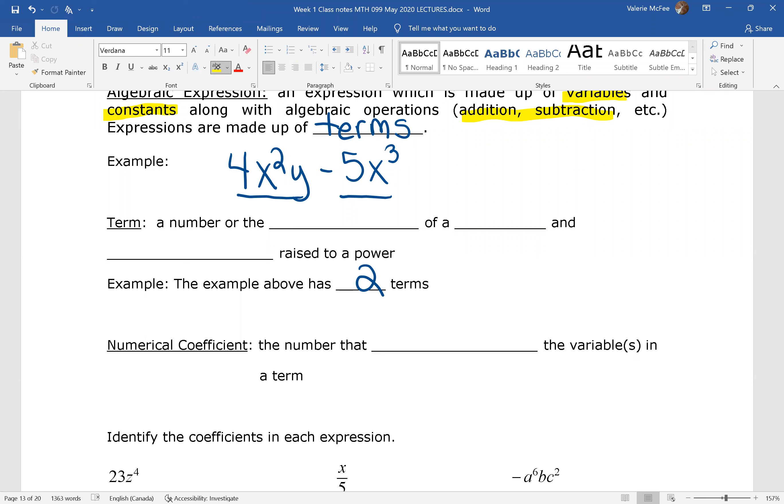Now, what is a term? I said there's two terms here. A term can be just a number, or it can be the product of a number and variables. It could be just one variable. It could be more than one variable. So we said that the example of that algebraic expression has two terms. The first term is 4x squared y. This is a product of a number. And you can see that the variable x is raised to the power of 2. Y is just raised to the power of 1. The second term is negative 5x cubed. Again, it's a product. It's the multiplication of negative 5 and x cubed.